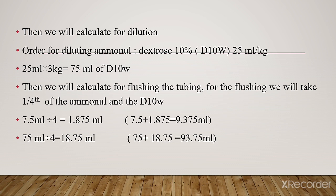For flushing the tubing, we take 1/4th of the aminol and dextrose in water. If you are using a large IV set rather than a micro set, you need to calculate for flushing. We already have 7.5 ml of aminol, divided by 4, giving 1.875 ml for flushing. So total aminol: 7.5 ml plus 1.875 ml equals 9.375 ml.